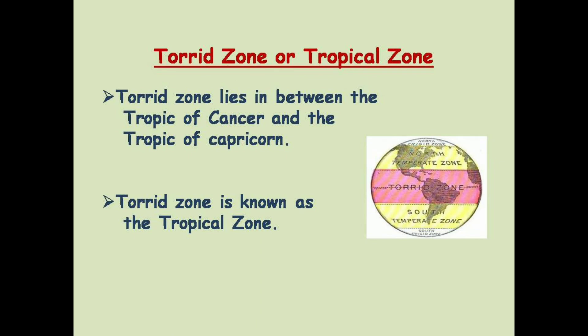First of all, we will discuss about the torrid zone or tropical zone. As you can see in this picture, the torrid zone lies in between the Tropic of Cancer and the Tropic of Capricorn. This region receives the direct vertical rays of the sun for almost the whole year. Therefore, this zone gets the maximum heat from the sun and is also known as the torrid or tropical zone.